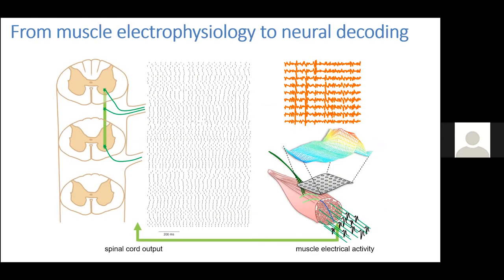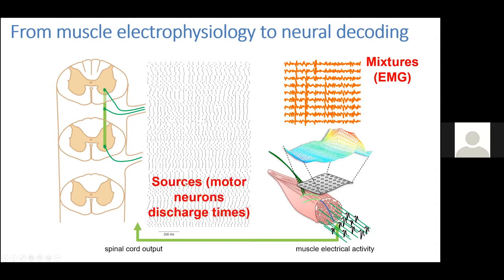Nowadays, we have expanded this approach by trying to increase the number of neural cells we can decode from EMG. The current trend — the topic of this session — is to record high-density EMG, meaning EMG recorded from several tens or even hundreds of electrodes over a muscle. In this case, we get mixtures of electrical activity coming from a number of neurons in the spinal cord, and we look for the sources — the discharge times of the motor neurons — inverting the process to go from multi-channel EMG directly to the sources, increasing the number of neurons we can interface.